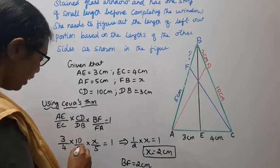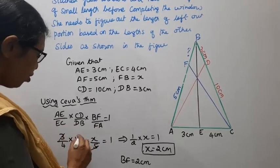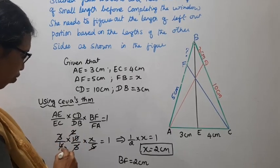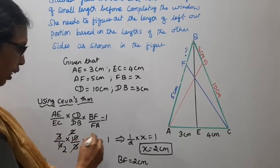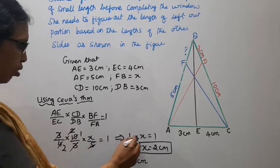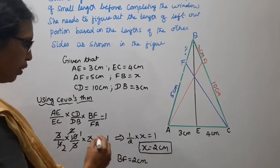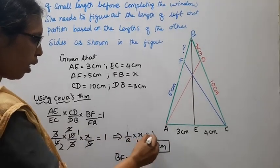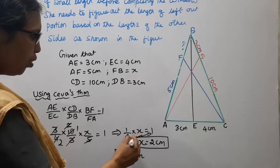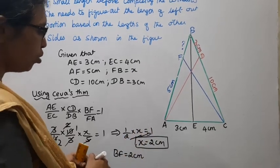Simplifying: 3 cancels, 5×2=10, 2×2=4. This gives 1/2 × x = 1. Cross multiplying, x = 2cm.